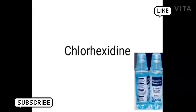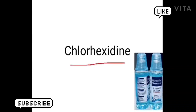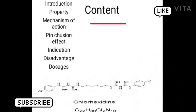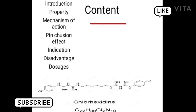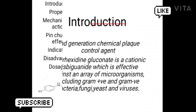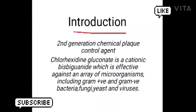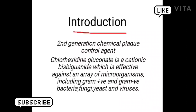Hello everyone, in this video we are going to discuss about chlorhexidine. Introduction: chlorhexidine is a second generation chemical plaque control agent. Chlorhexidine gluconate is a cationic bisbiguanide which is effective against an array of microorganisms including gram-positive and gram-negative bacteria, fungi.